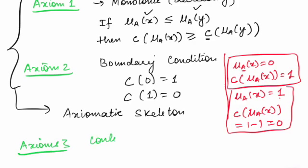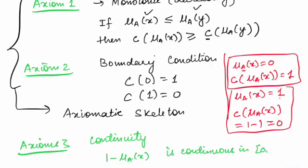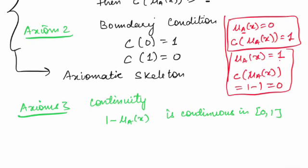Axiom 3 is continuity. The function 1 minus μ_A(x) is continuous on the closed interval [0,1].